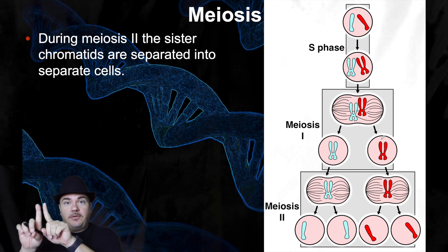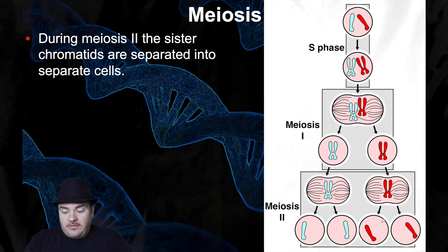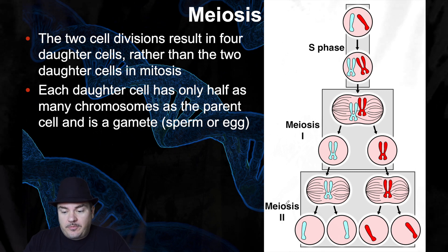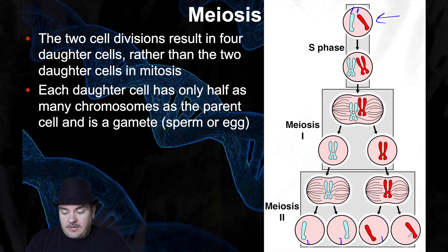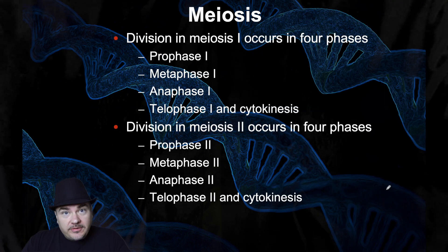Then you have to do meiosis two. During meiosis two, you take the sister chromatids, pull them apart, and move those daughter chromosomes to two opposite sides of the cell so the cell can split into two separate cells. At the end of meiosis two, you end up with four cells, and these cells are now haploid — you have one of each type of chromosome. You went from a diploid cell to four haploid cells, and these haploid cells are the gametes, either sperm cells or egg cells.